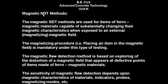Now we will see the Magnetic NDT Methods. The magnetic NDT methods are used for items of ferromagnetic materials capable of substantially changing their magnetic characteristics when exposed to an external magnetizing magnetic field. The magnetizing procedure, i.e. placing an item in the magnetic field, is mandatory under this type of testing. The magnetic flaw detection method is based on exploring the distortion of a magnetic field that appears at defective points of items made of ferromagnetic materials. The sensitivity of magnetic flaw detection depends upon the magnetic characteristics of materials, indicators, probes, magnetizing modes, etc.